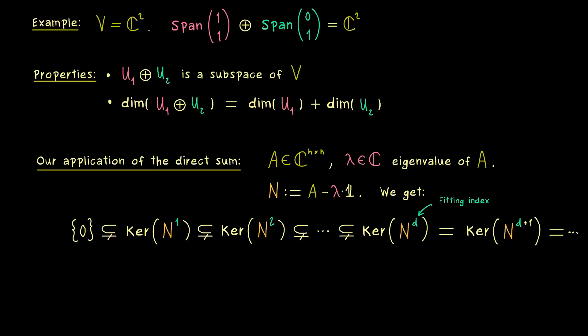In this case, the chain would be really small, and on the other hand, the largest chain we have, if this fitting index is equal to the dimension n. So you see, every other number in the middle is also possible for the fitting index. Moreover, in addition to the chain with the kernels, we also have a chain for the range.